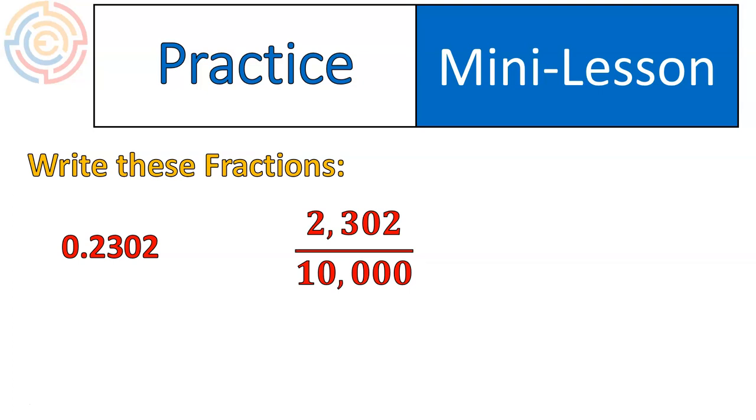There it is. Two thousand three hundred two out of ten thousand or over ten thousand. For this one, we simplify it down. The greatest common factor in this case is two. So we just divide the top and bottom both by two. And you're left with one thousand one hundred fifty one over five thousand, or one thousand one hundred fifty one five thousandths.